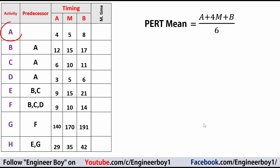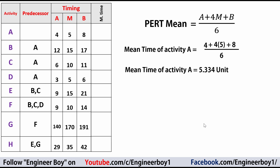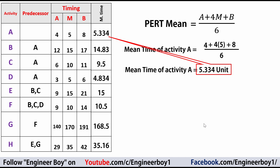The PERT mean formula is: (A + 4M + B) / 6. For activity A, the optimistic time is 4, most likely is 5, and pessimistic is 8. So: (4 + 4×5 + 8) / 6 = 5.334 units. This value is placed in the table, and the same formula is applied to calculate the PERT mean for all remaining activities.